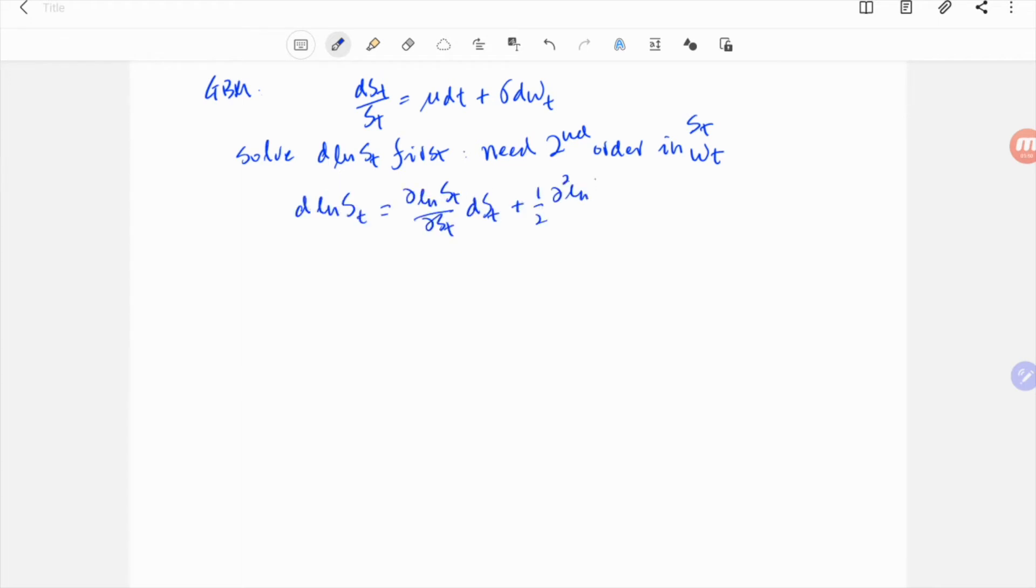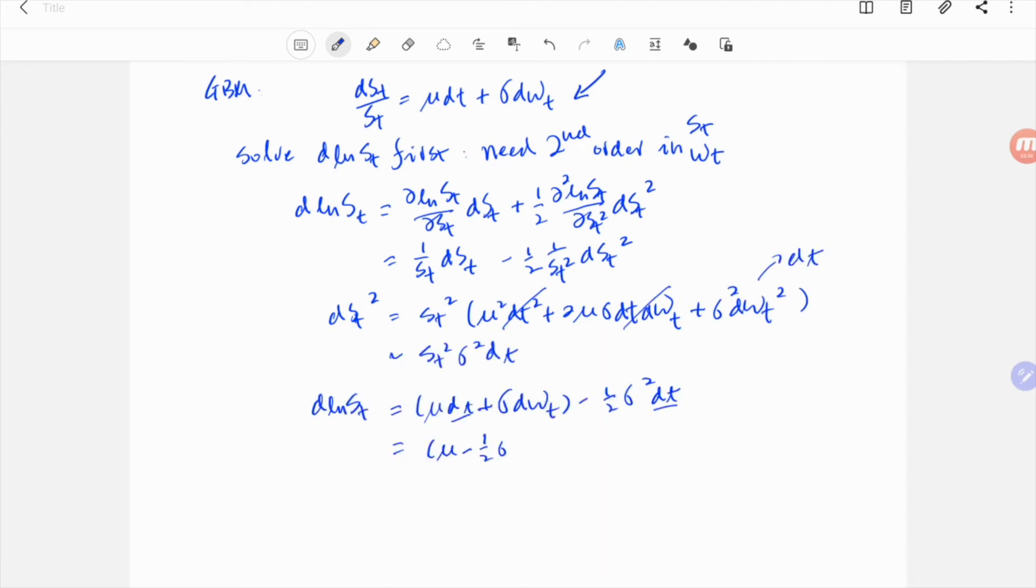So, differentiate d log st to second order, and plug in the original SDE. We get d log st equals mu minus half sigma squared dt plus sigma dwt.